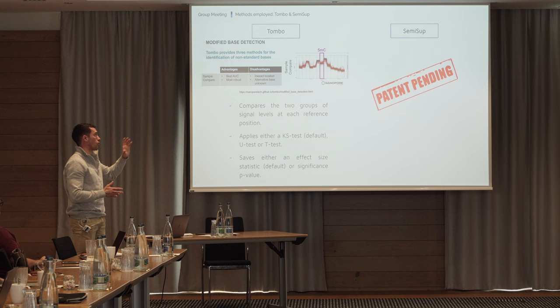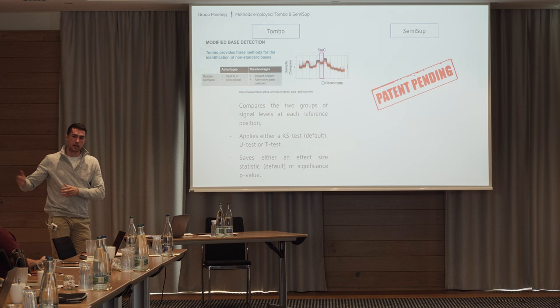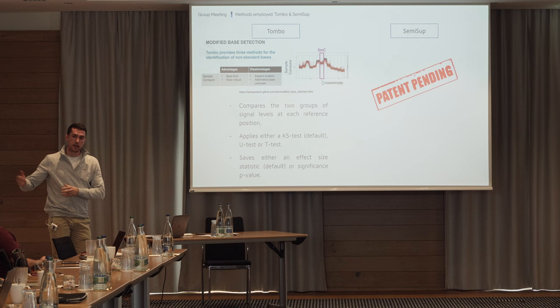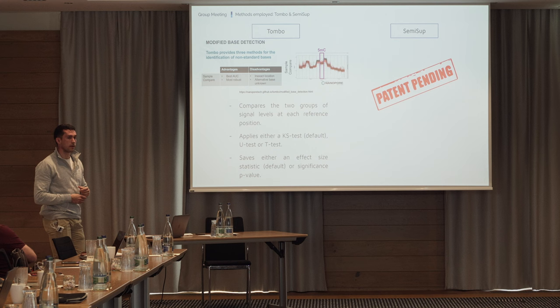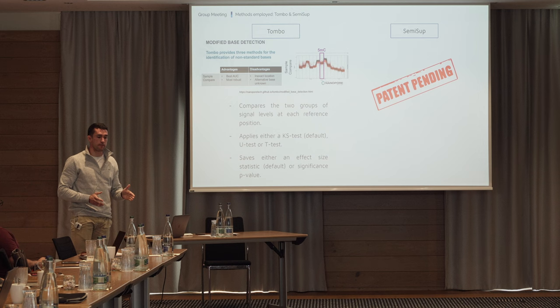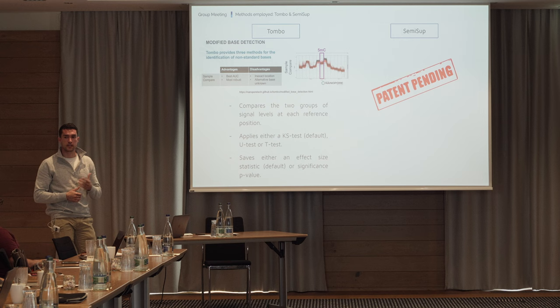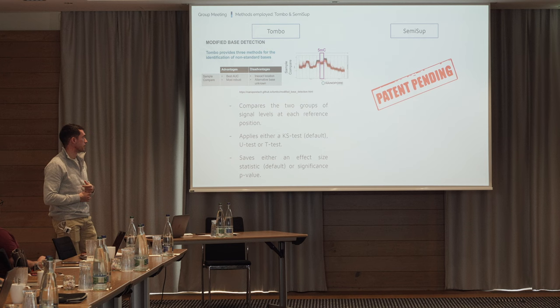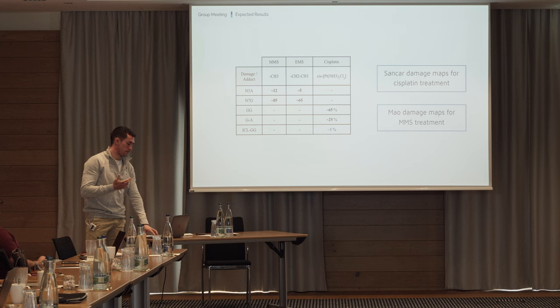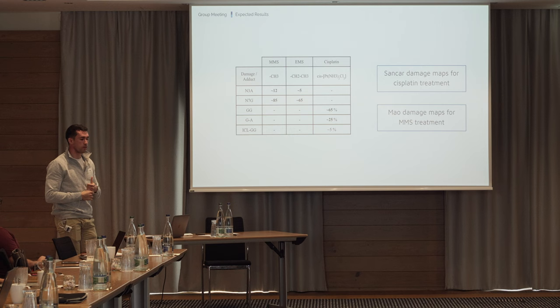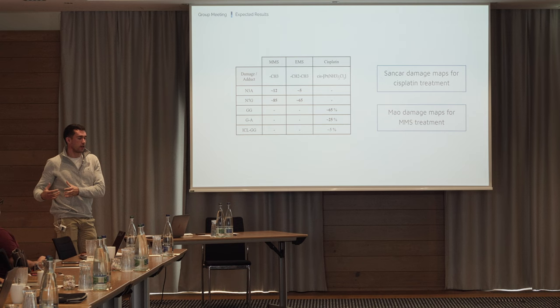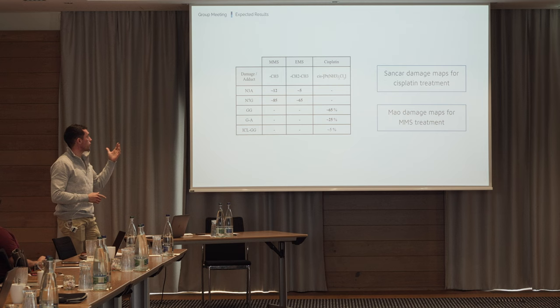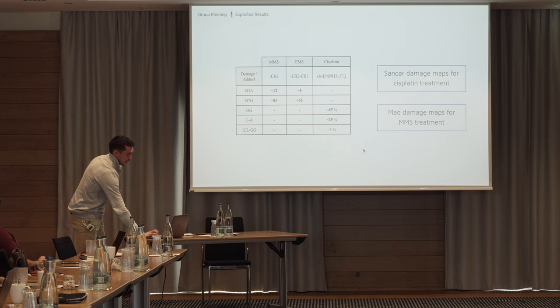We used two methods. One is pending a patent, so we won't talk about it today—anyone interested can discuss it during the coffee break. The second is an open source method by Nanopore. The idea is simple: you have treated and untreated samples; for a reference position, you have all reads mapping to it with their currents, compare them through Kolmogorov-Smirnov, derive a statistical test, and put the threshold at whatever p-value you choose. The semi-supervised method uses background damage maps developed by Sankar and Mao for MMS and cisplatin, and known proportion data from Beranek et al. For cisplatin, we know damage is mostly located in GG or GA dinucleotides.